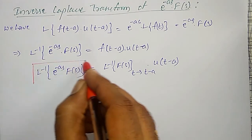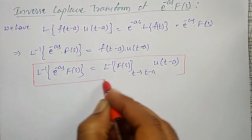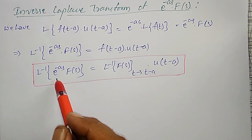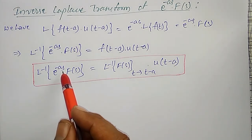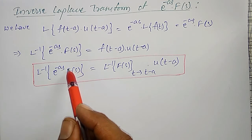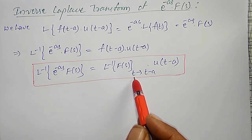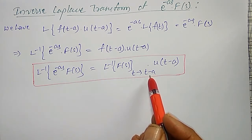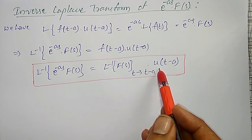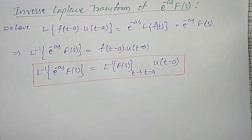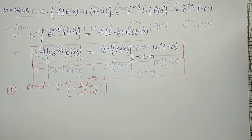This formula you can remember — that will become simple. Whenever it is multiplied with e to the power minus as, you have to find the inverse Laplace Transform of F of s, and there t is replaced by t minus a, and extra multiplied with u(t minus a). That will become very simple. An example on this I am going to do here.